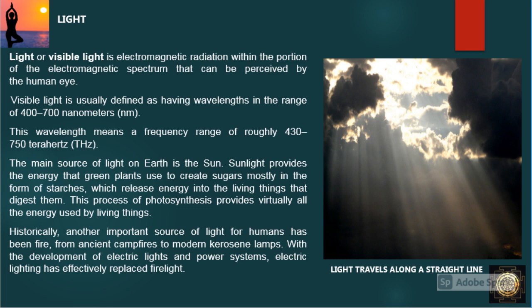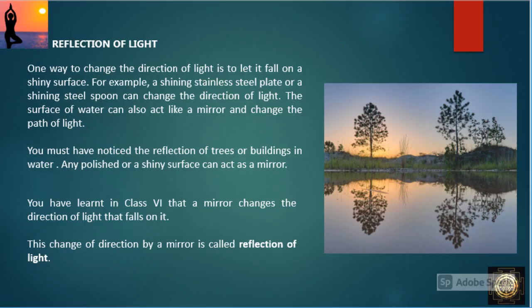Historically, another important source of light for humans has been fire, from ancient campfires to modern kerosene lamps. With the development of electric light and power systems, electric lighting has effectively replaced fire light. Light travels along a straight line.